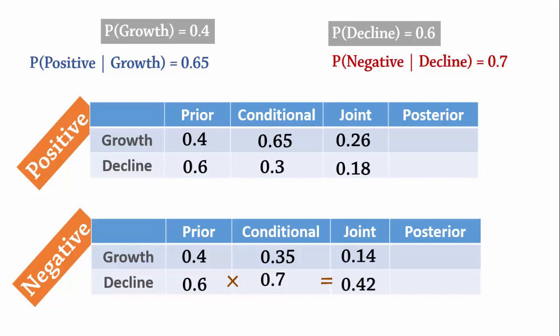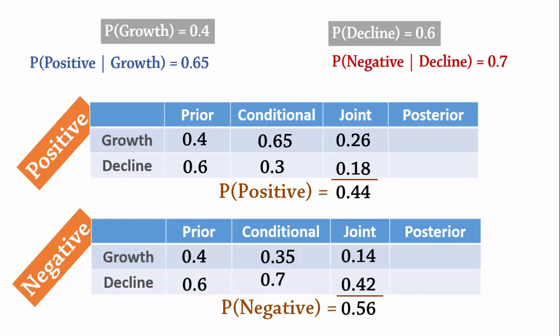Next, we add the joint probabilities to obtain marginal probabilities. For positive, the sum is 0.44, and for negative, the sum is 0.56. That is, the probability of a positive report is 0.44 and the probability of a negative report is 0.56.